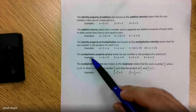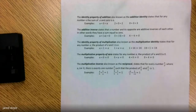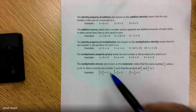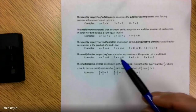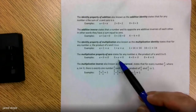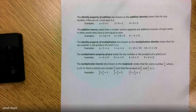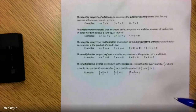Next up, we have the multiplicative property of zero. This states that for any number a, the product of a and zero is zero. So a times zero is zero, zero times a is zero, four times zero is zero, and zero times four is zero. In a nutshell, if you're multiplying by zero, your product will be zero.